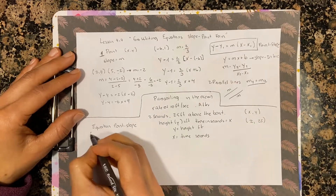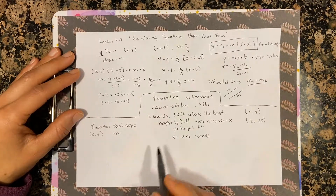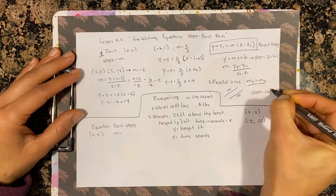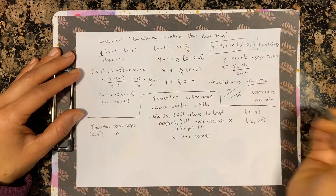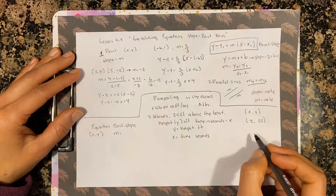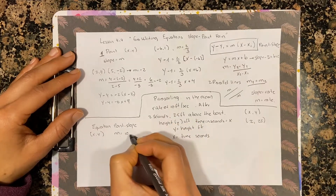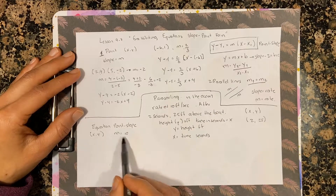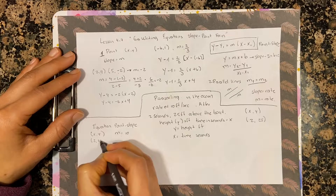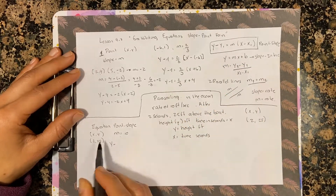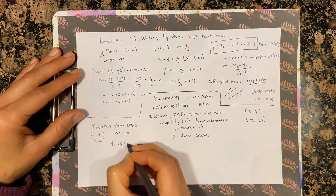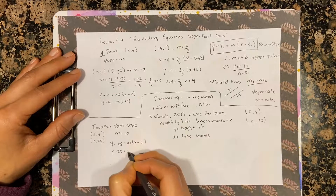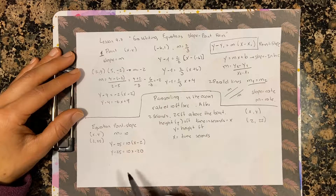For point-slope I need a point and a slope. The slope is the same as the rate, so m = 10 feet per second. Now I can write: y minus 25 equals 10 times (x minus 2). Distributing: y minus 25 equals 10x minus 20, giving the equation in point-slope form.